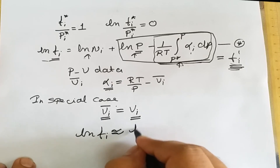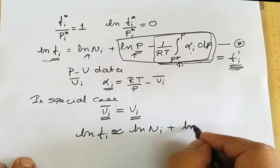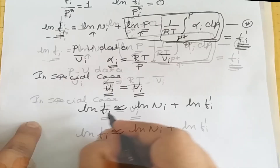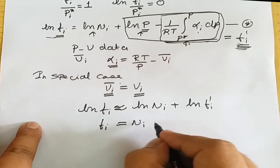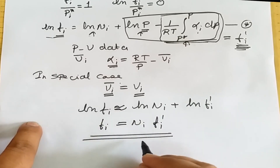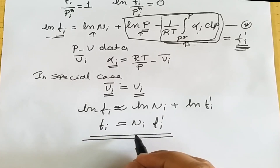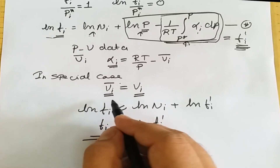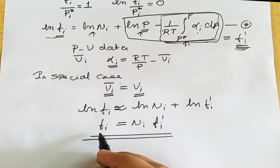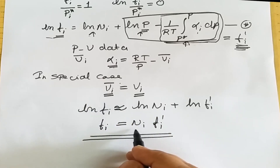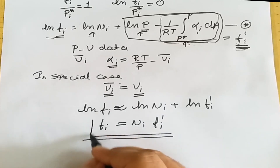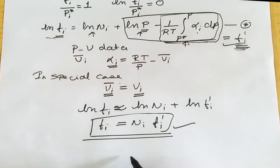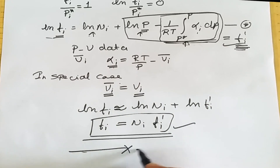Hence our equation takes the form: ln(f_i) = ln(n_i) + ln(f_i°). Removing the logarithm from both sides gives f_i = n_i · f_i°. With this relation we can find the fugacity subject to the condition that volume does not change. So the fugacity of the gas equals the mole fraction of the i-th constituent in the mixture multiplied by the fugacity in its pure state at total pressure. With both equations we can easily determine the fugacity of a mixture of gases.